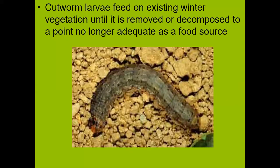They're in the fields feeding on vegetation prior to planting, and that's why you really need to consider using a pyrethroid insecticide at the time you burn down as well as at the time you plant if you're in a high-risk area for cutworm damage.